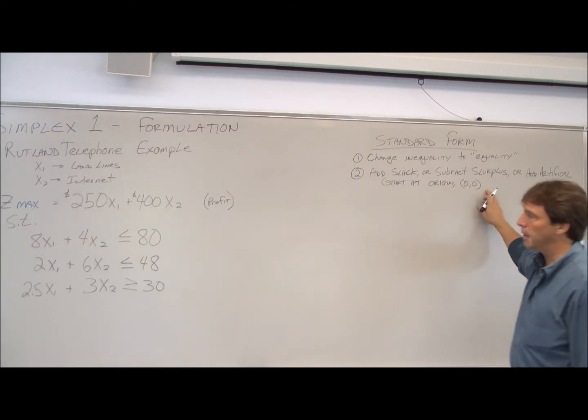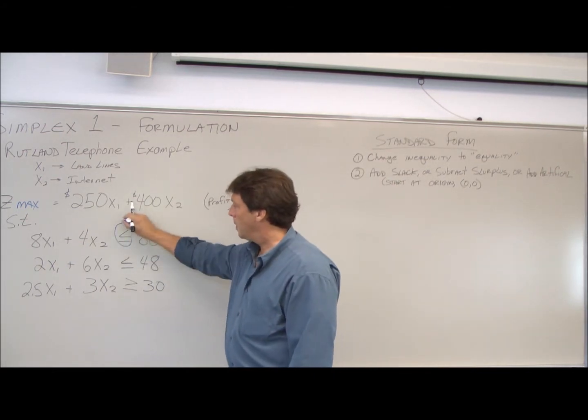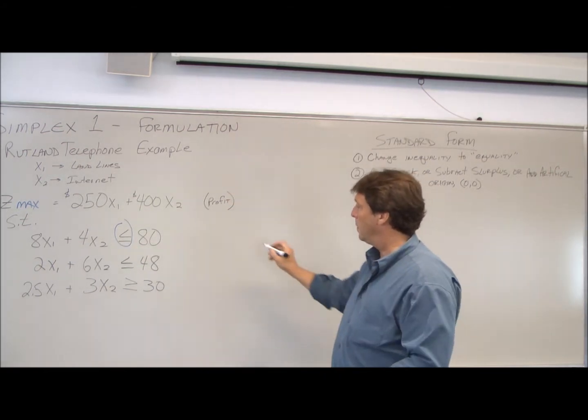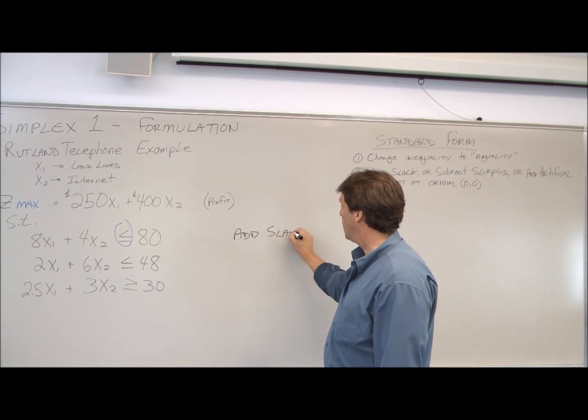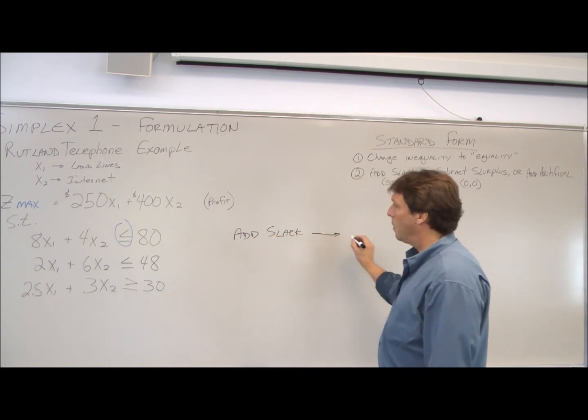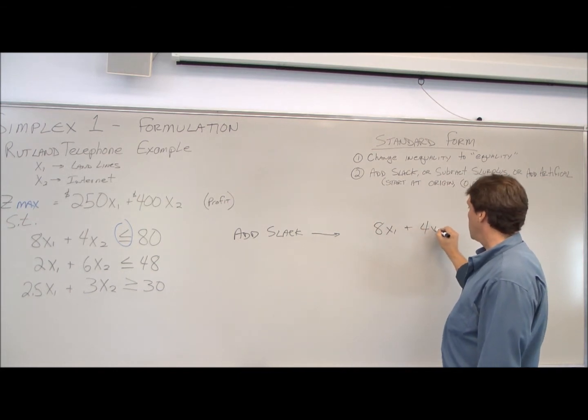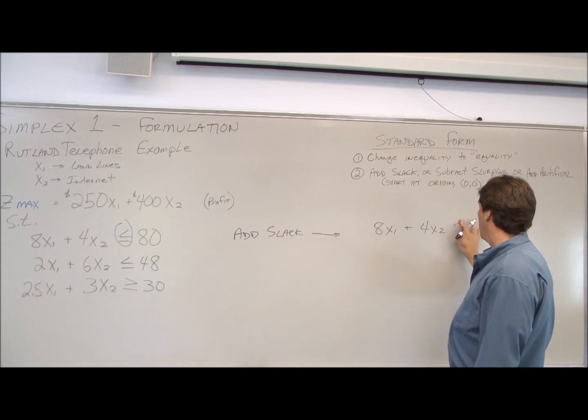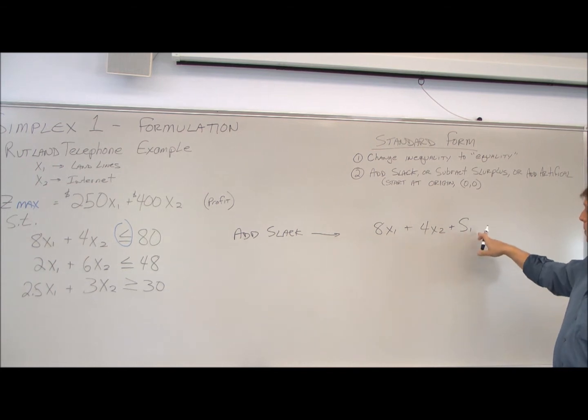Our first constraint is a less than or equal to, so we add slack. And so in standard form, this would come over to 8x1 plus 4x2 plus our slack variable, which is s1 because it's our first constraint, is equal to 80.